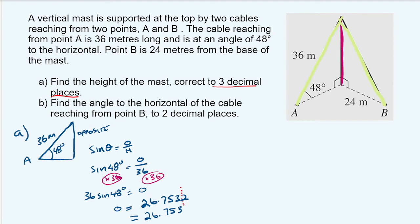Now for B over here, we now want to find this angle, the angle to the horizontal of the cable reaching point B. So we want to find this little bit in here. So this is going to be theta.